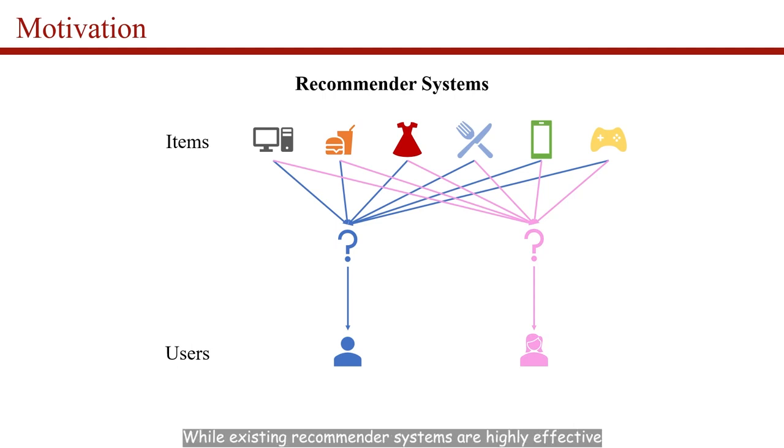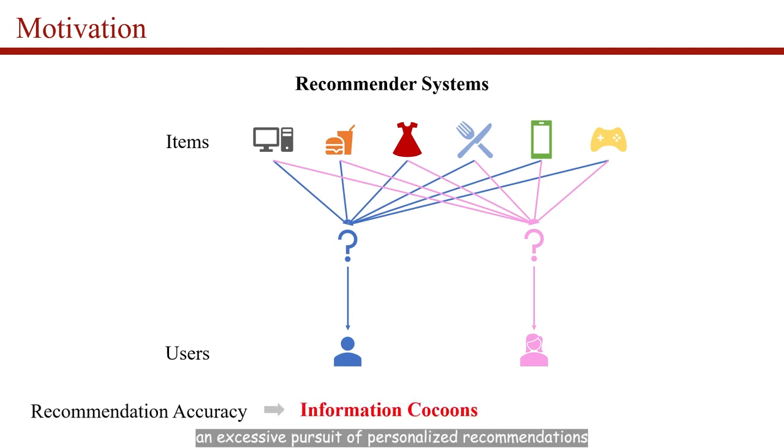While existing recommender systems are highly effective in suggesting items meeting personal interest and successfully alleviating information overload, an excessive pursuit of personalized recommendations can result in the creation of information bubbles. That is, it is difficult for users to encounter other items that interest them. To address this issue, recommender systems need to pay more attention to recommendation diversity.